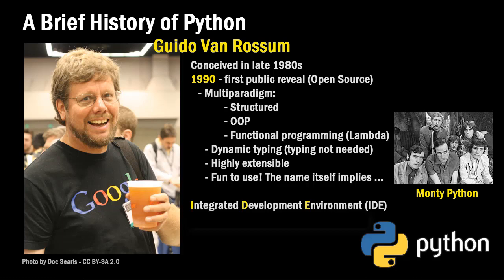It's interesting that languages today mostly have integrated development environments, or IDEs. The IDE allows a one-stop place to develop, debug, and package a program or application. Visual Studio is an IDE for C-sharp, Android Studio is the IDE for creating Android applications, and Xcode is the IDE for Swift and creating iOS applications.